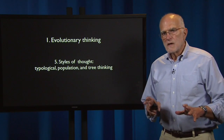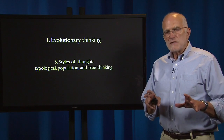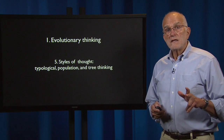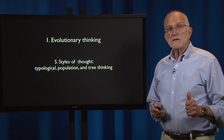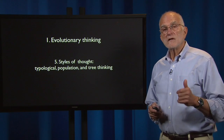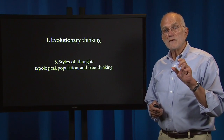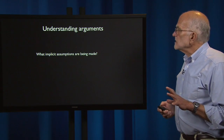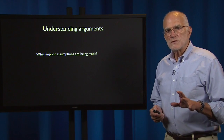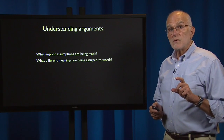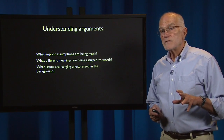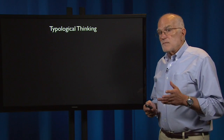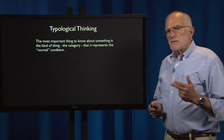The fifth and final issue in basics about evolutionary thinking as they pertain to evolutionary medicine is that there are quite different styles of thought. In particular, we can think typologically, we can think at the population level, or we can think about evolutionary trees, and the way that one is thinking makes quite a difference to the analysis of the problem.